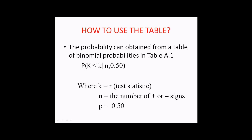The one-sample sign test requires table A.1 to find the probability. Further understanding about how to use the table will be shown in the example.